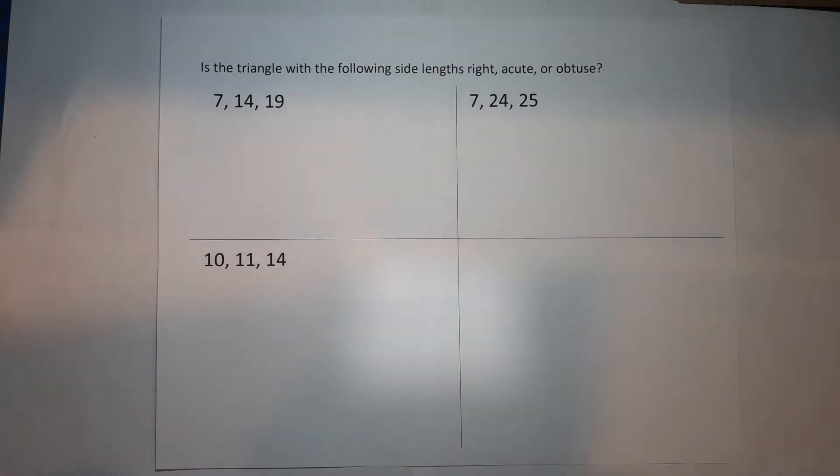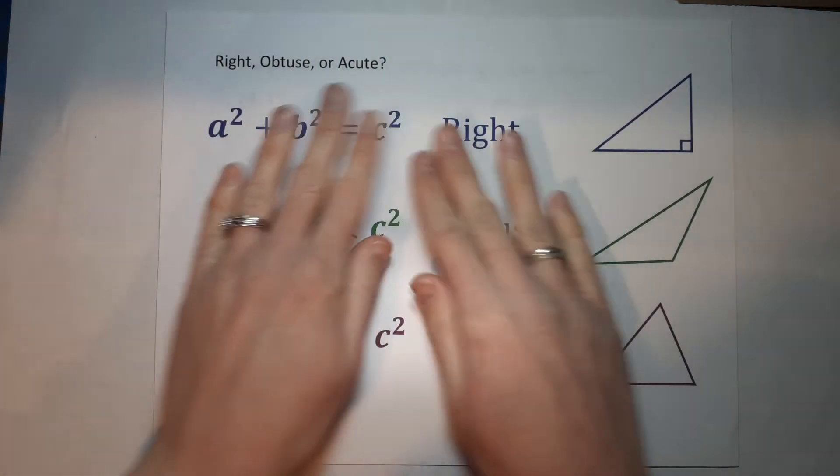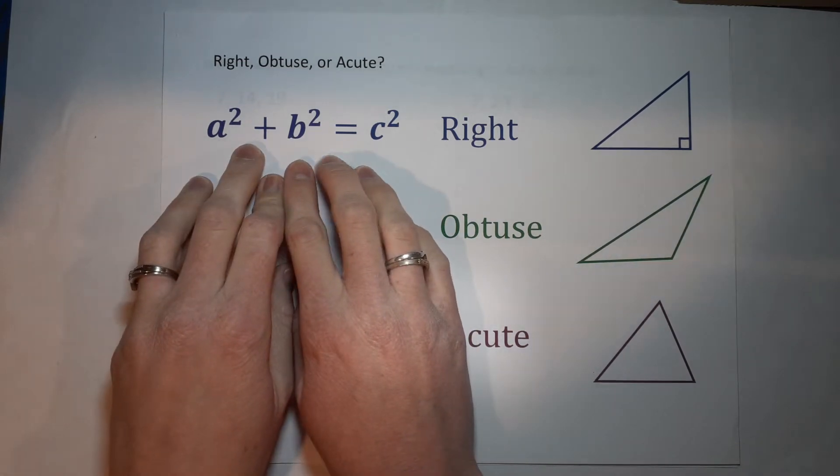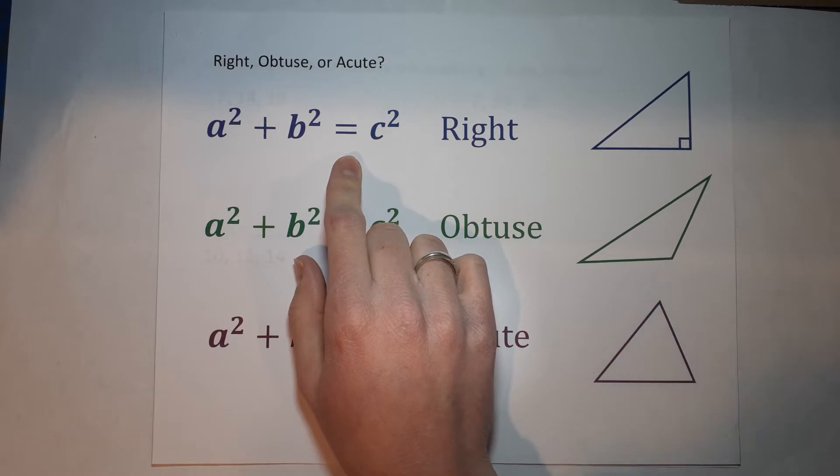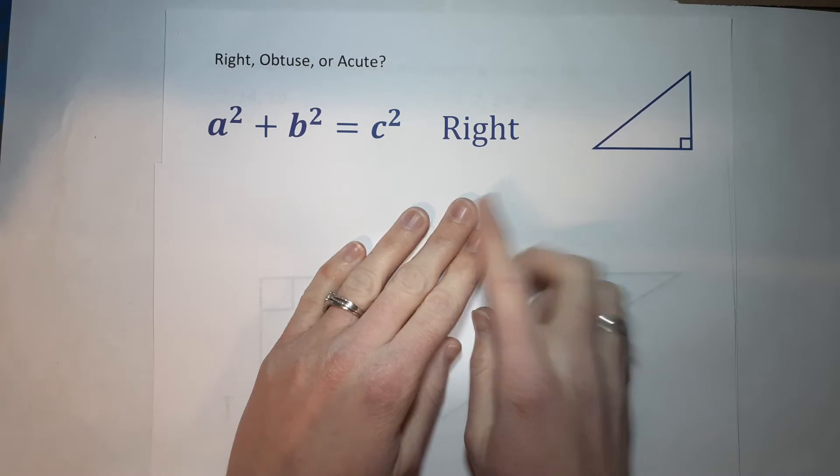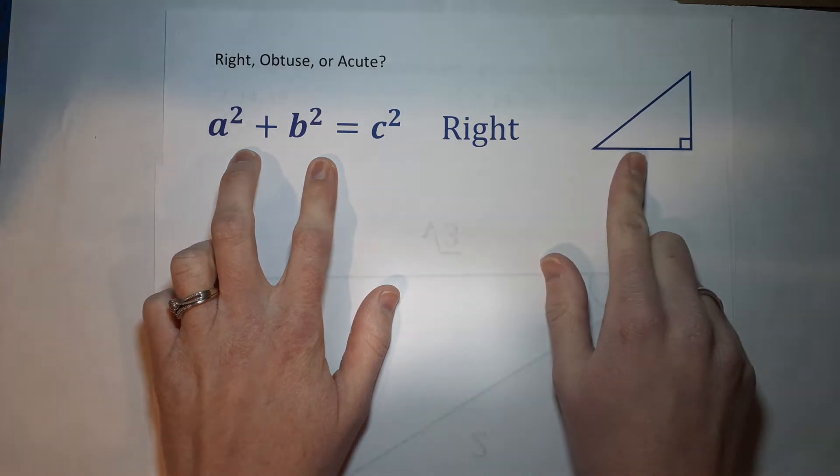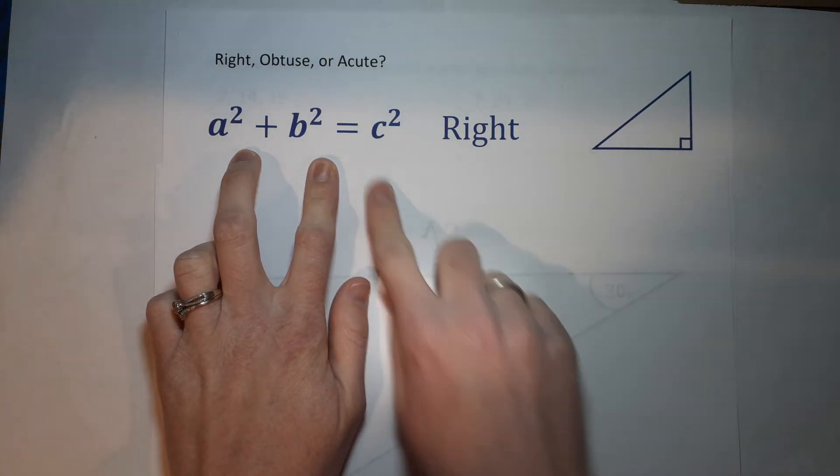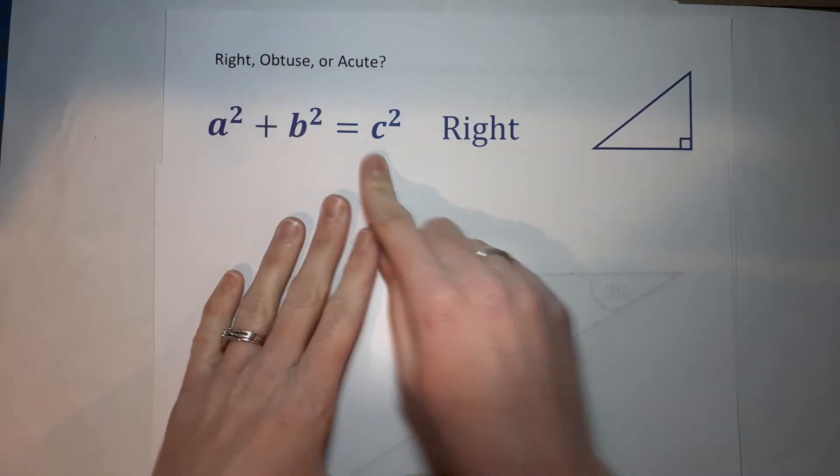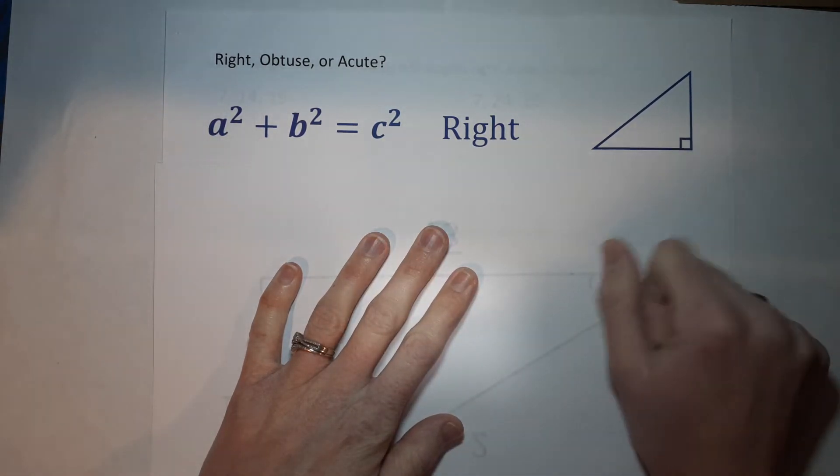We are using the Pythagorean theorem to help us figure this out. So the Pythagorean theorem, you're probably familiar with it, is a squared plus b squared equals c squared. You know what, I kind of wish I would have covered this up, make it a little mystery, right? So if a squared plus b squared equals c squared, it is a right triangle. The biggest thing to remember is the c is the biggest number, the largest number. So if a squared plus b squared equals c squared, it is a right triangle, it has a right angle.